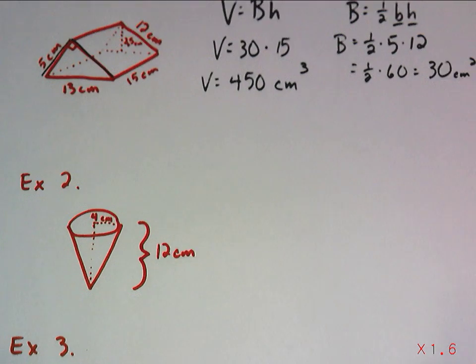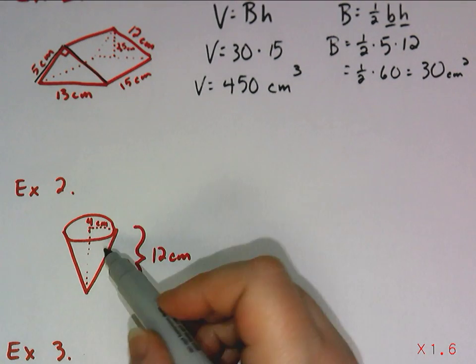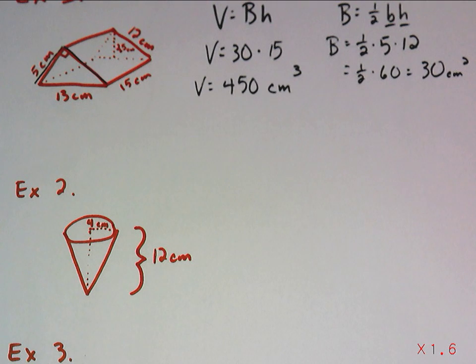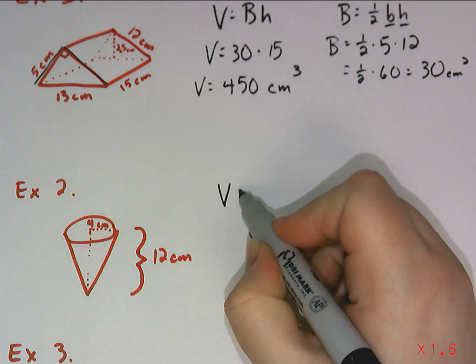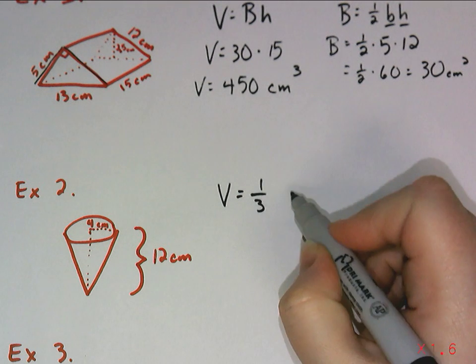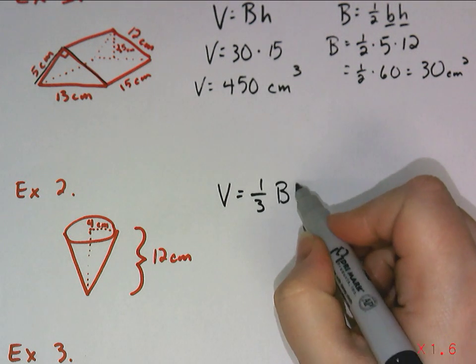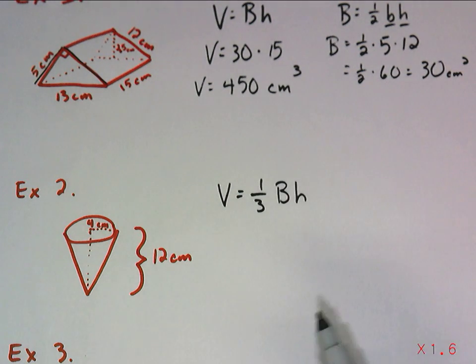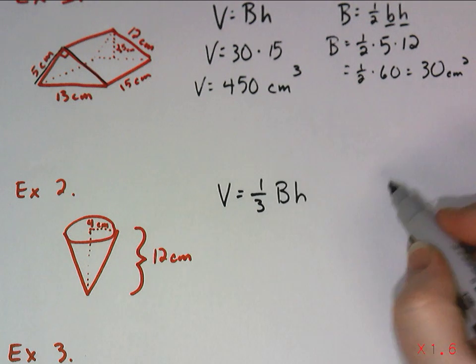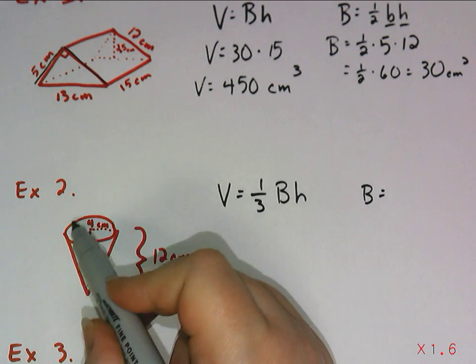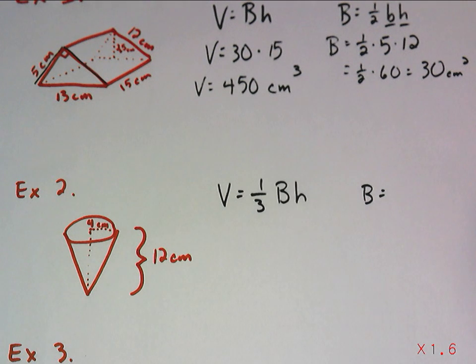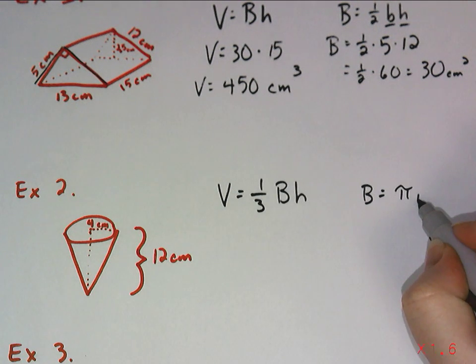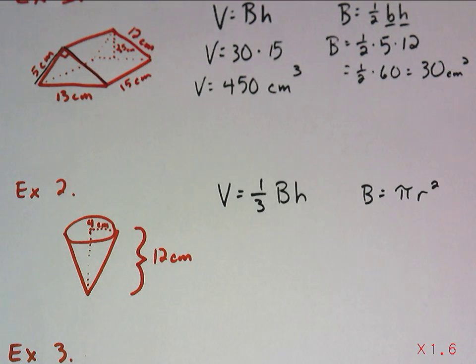Let's take a look at example two. So what shape is this? Hopefully you can tell from my drawing that it is a cone. And I know that the volume of a cone is one-third times the area of the base times the height. Again, to calculate the area of the base, I might have to do a little bit of work first. This cone has a circular base. So the area of the base is going to be found by finding the area of the circle pi r squared.